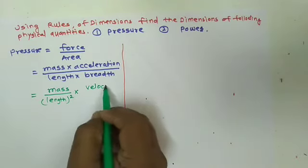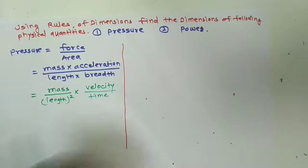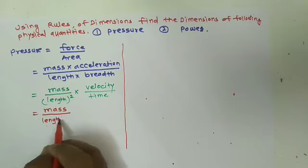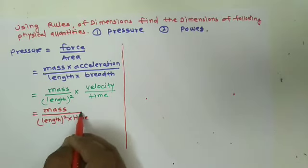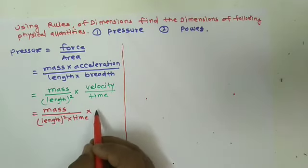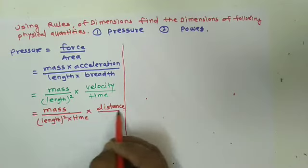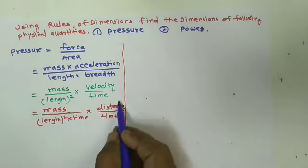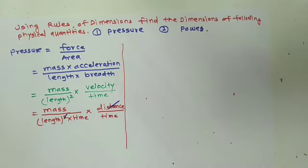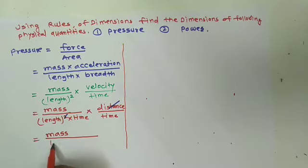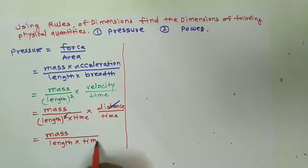Substituting, we write mass divided by length squared, multiplied by velocity upon time — which is distance upon time — divided by time again. One length from velocity and one length from area cancel, leaving the dimensional formula for pressure as mass divided by length multiplied by time squared.